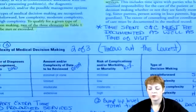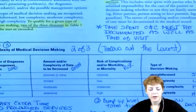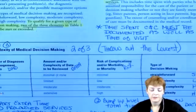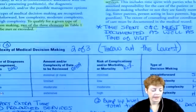You've got straightforward, low, moderate, and high. The first column is what I call DMO — number of diagnoses or management options. The choices you have are minimal, limited, multiple, extensive. Medical decision-making is one of the most nebulous areas of E&M to try and score.